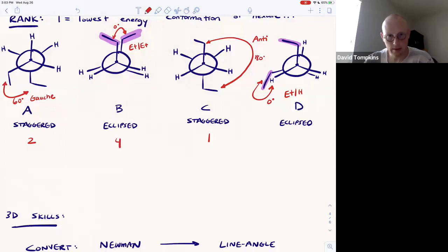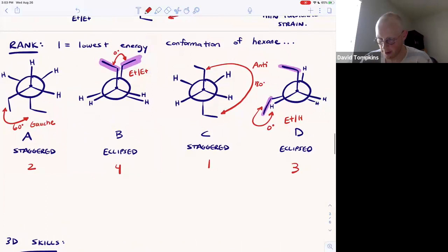So the ethyl-ethyl eclipse is the energy maximum. And a lower energy, but still a maximum on the diagram or transition state, is this ethyl-hydrogen eclipse interaction. Be able to draw Newman projections and then label them according to their stability or energy for any given acyclic compound that exhibits free rotation.